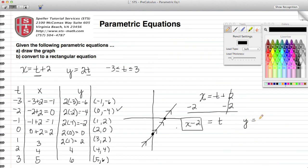The second equation was Y is equal to 2T. So now instead of writing T, I'm going to write X minus 2, and then I'm going to distribute that 2 to both terms. So 2X minus 4. I have Y is equal to 2X minus 4, and that there is our rectangular equation.